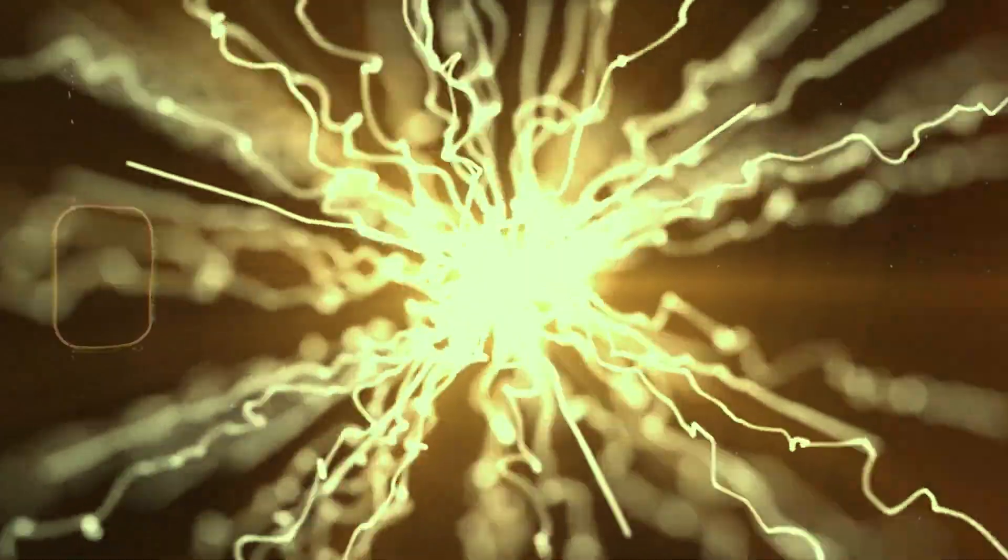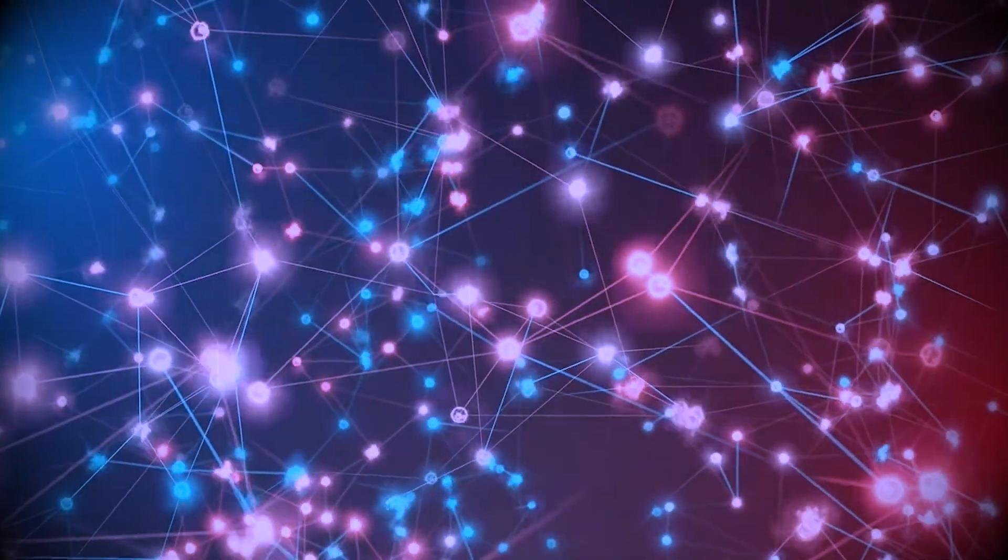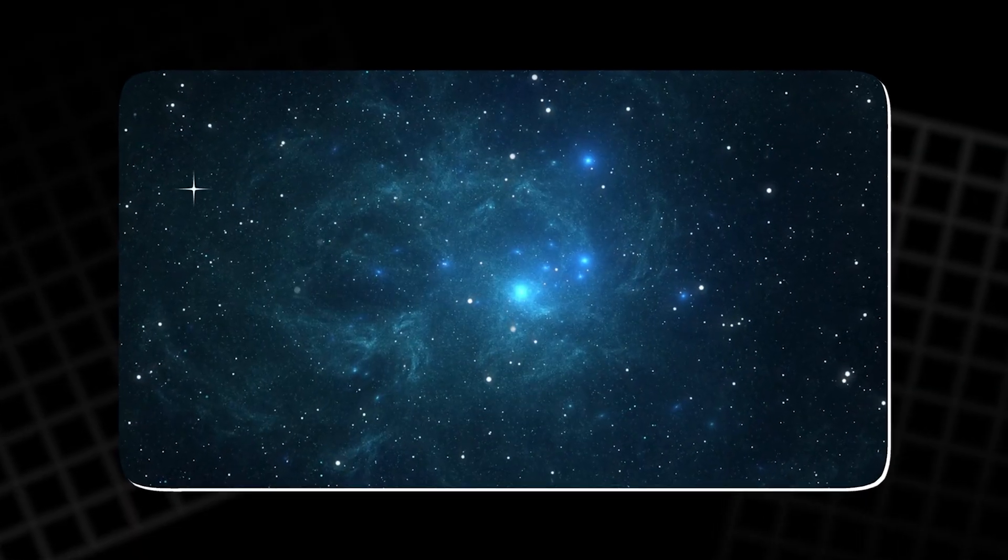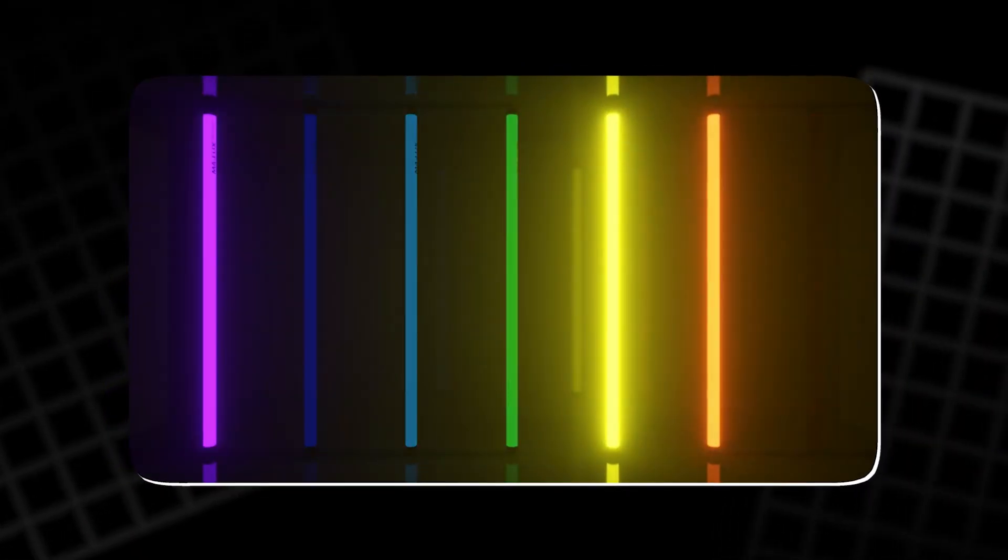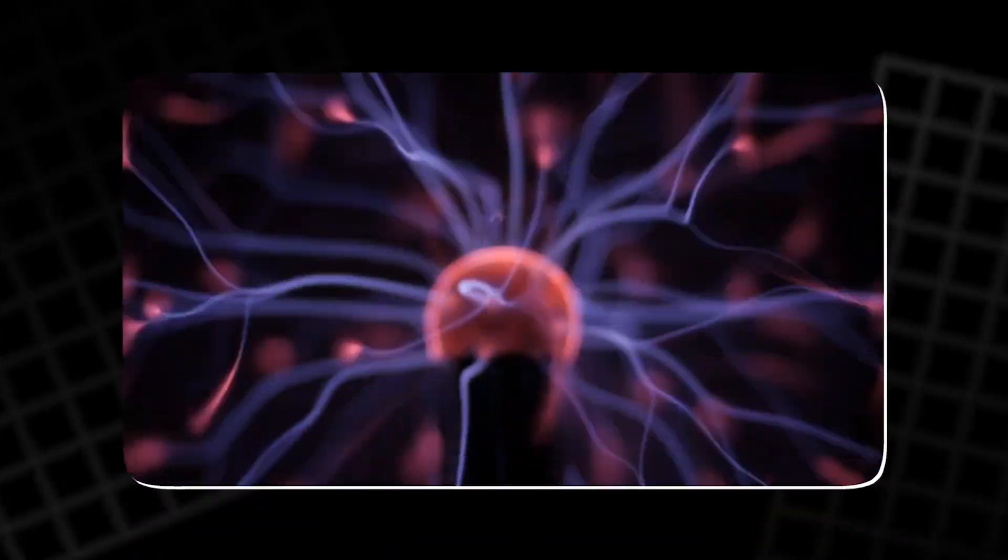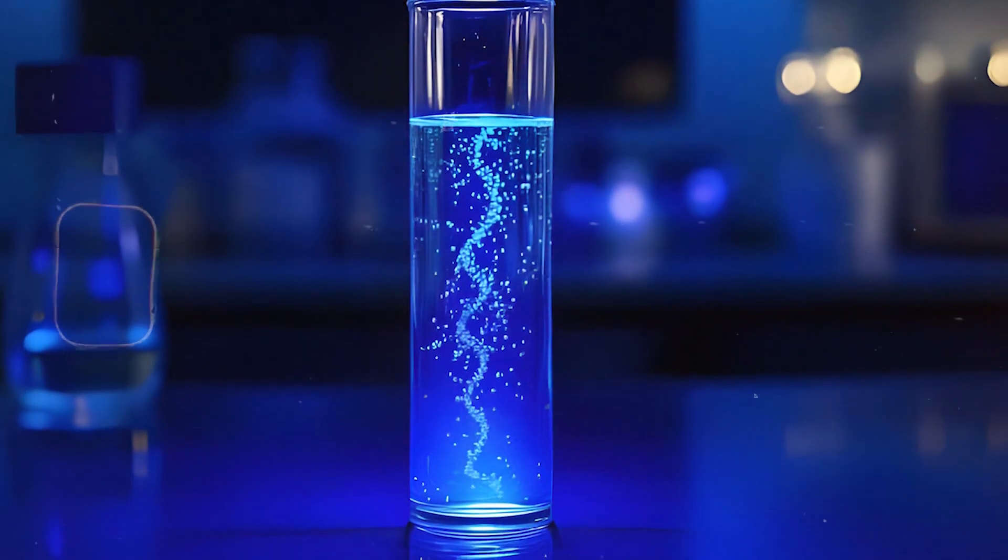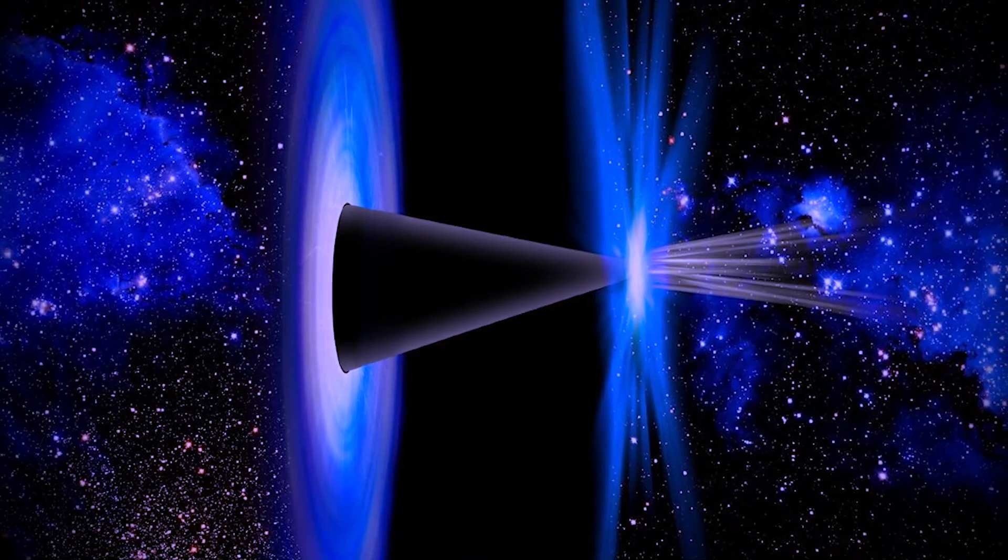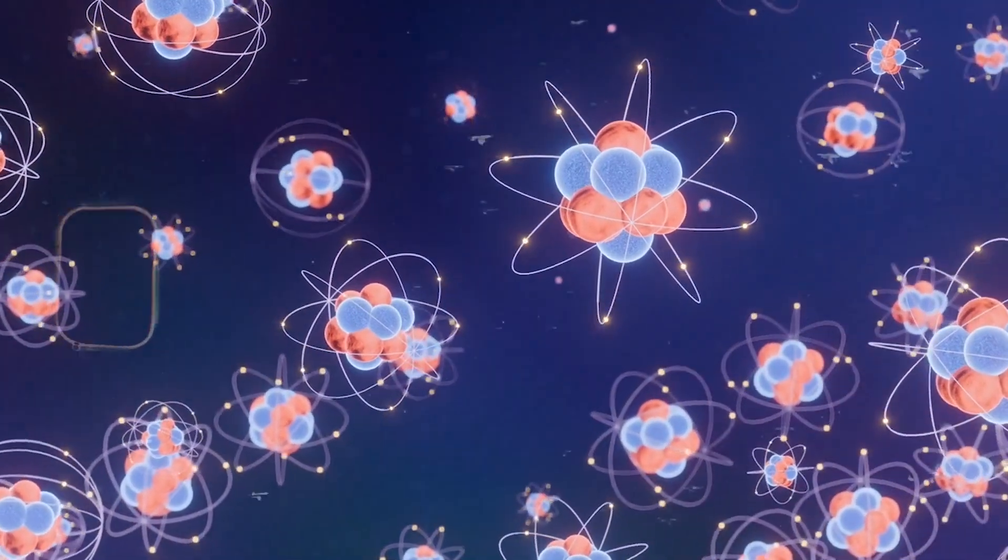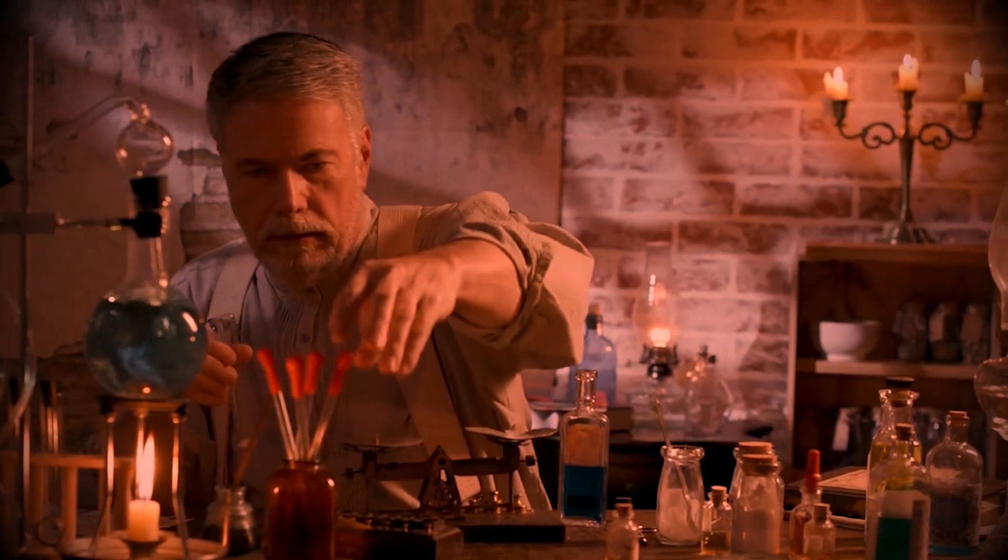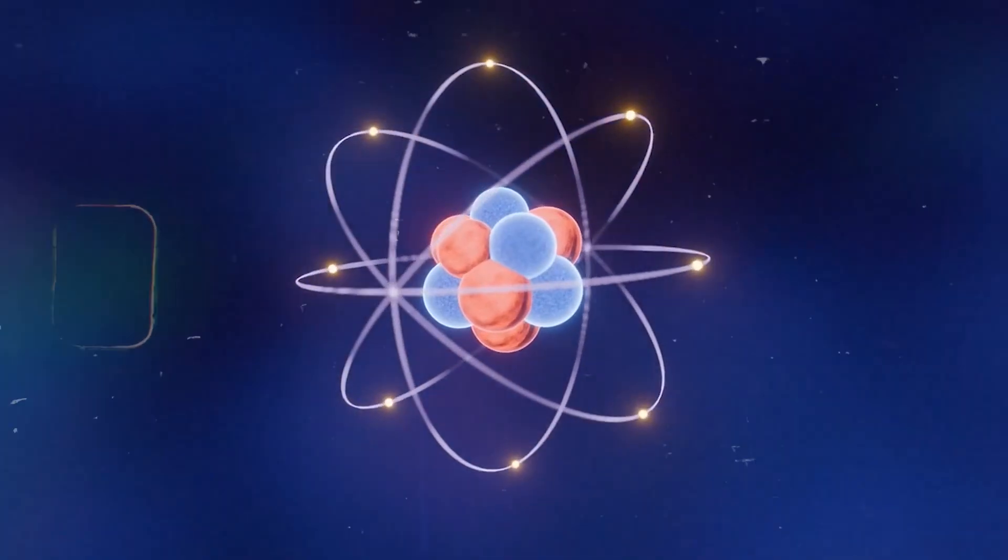This blend of light, energy, and matter encapsulates the essence of modern science. It shows that everything from the color of a star to the glow of a gas tube is determined by the movement of electrons and the exchange of energy. Even phenomena that appear simple, like a glowing glass cylinder, are windows into the deep mechanics of the universe. It's a reminder that understanding the fundamental behavior of atoms allows humanity to explain the wonders of nature in clear, measurable ways.